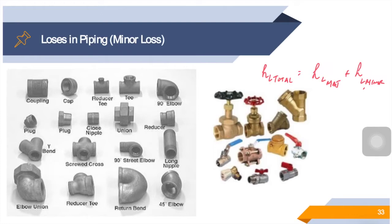tees, and inlets. As you can see, we have reducer tees, elbows, reducers, unions, etc. These are minor components required for connecting pipes, and it is through these components that minor losses occur. These components interrupt the smooth flow of the fluid and cause additional losses because of flow separation and mixing.